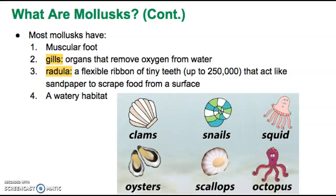Most mollusks — notice, not all — have a muscular foot. They have organs called gills that help them remove oxygen from water, which is important for cells to make energy. Most mollusks also have an organ called a radula, a flexible ribbon with lots of tiny teeth built into it — sometimes up to 250,000 teeth. Together those teeth act like sandpaper, and mollusks use their radula to scrape food from a surface, such as removing parts of a leaf or pulling moss off a rock. Not all mollusks have a radula, but a number do.